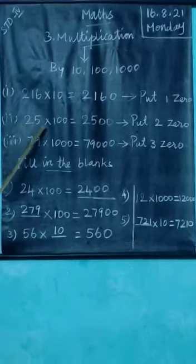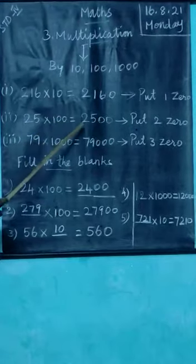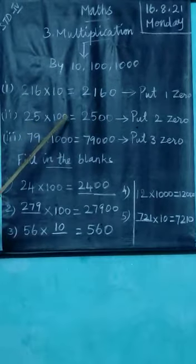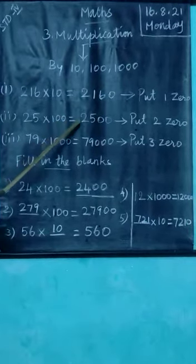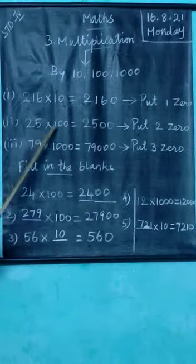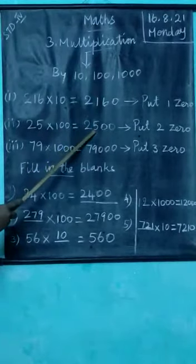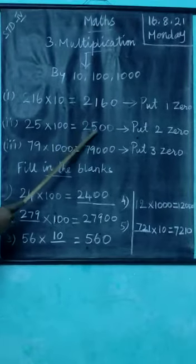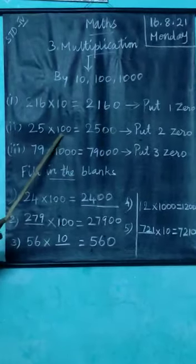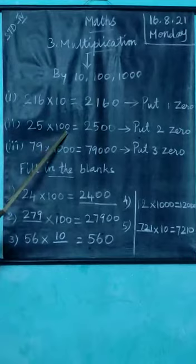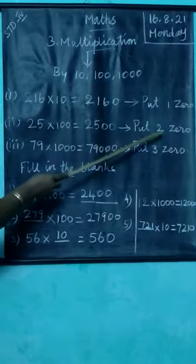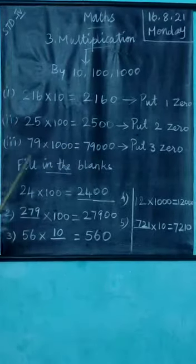Then see the second one: 25 into 100. To multiply a number by 100, put two zeros to the right of the number. Here 25 is multiplying 100, so we write 25 and put two zeros to the right. How many zeros in 100? Two zeros, so we put two zeros. Understand?